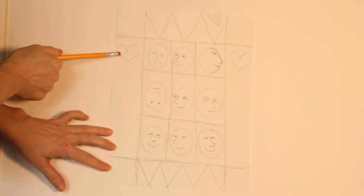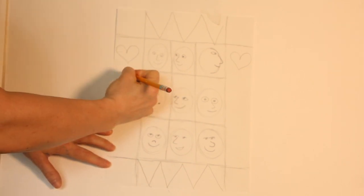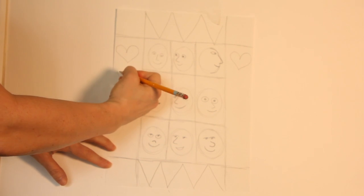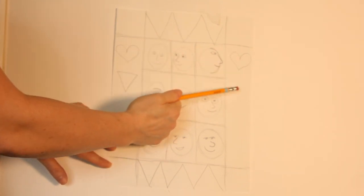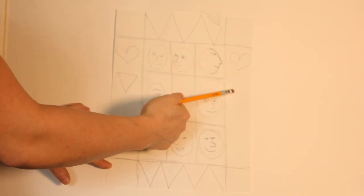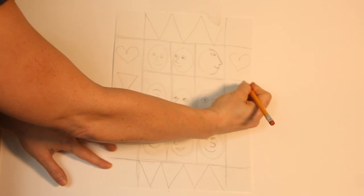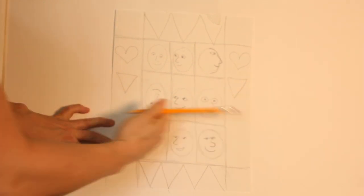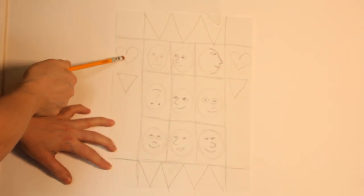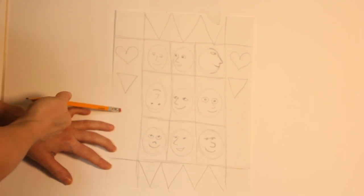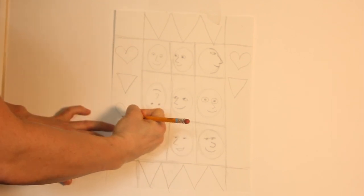What if I wanted to do a pattern? Heart and then a shape, triangle, heart. What would be the shape here? Triangle. Now if it's a pattern, what would come next? Heart, triangle. That's right, heart.